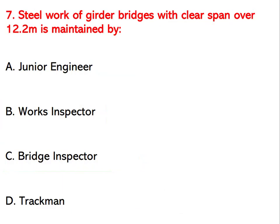The steel work of girder bridges with a clear span over 12.2 meters is maintained by which official? Options are junior engineer, works inspector, bridge inspector, or trackman. The right answer is bridge inspector.